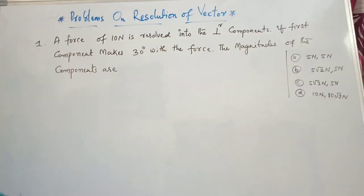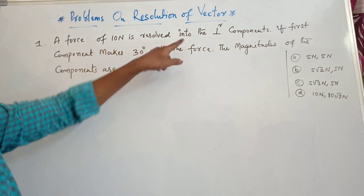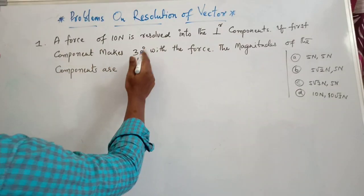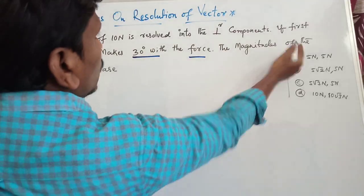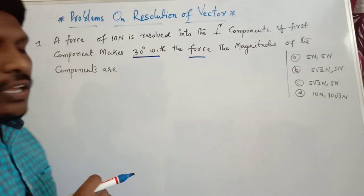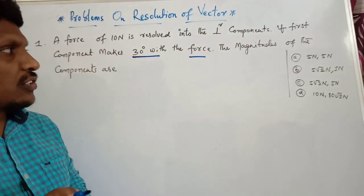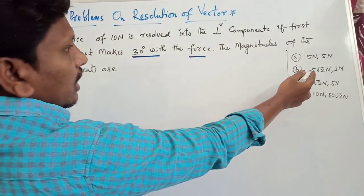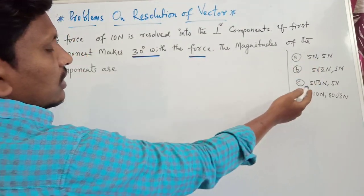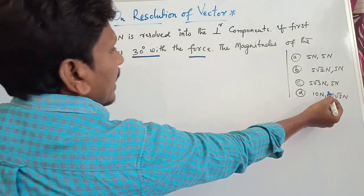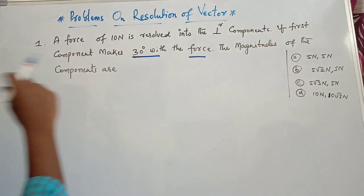First problem: a force of 10 Newtons is resolved into two perpendicular components. The first component makes 30 degrees with the force. Find the magnitude of the components. This is very important for NEET, JEE, and MSET also, so please continue to watch. The options are: 5N and 5N; 5√2 N and 5N; 5√3 N and 5N; or 10N and 10√3 N.